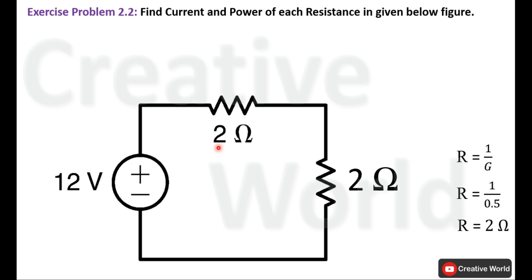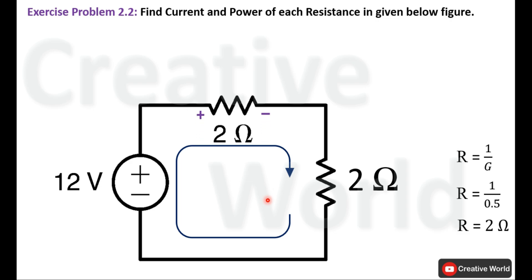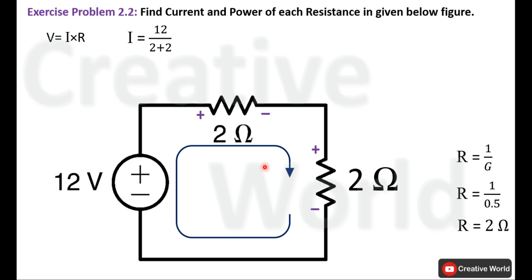We can replace the conductance value with 2 ohm and proceed further. In this circuit we have to calculate current and power dissipation of both resistances. We assume the direction of current is clockwise and assign polarities across both resistive elements — current entering terminals are positive and leaving terminals are negative. Using Ohm's law, I equal to V divided by R, where R is the total series resistance of 2 plus 2 ohm, and V is 12V, giving I equal to 3A.